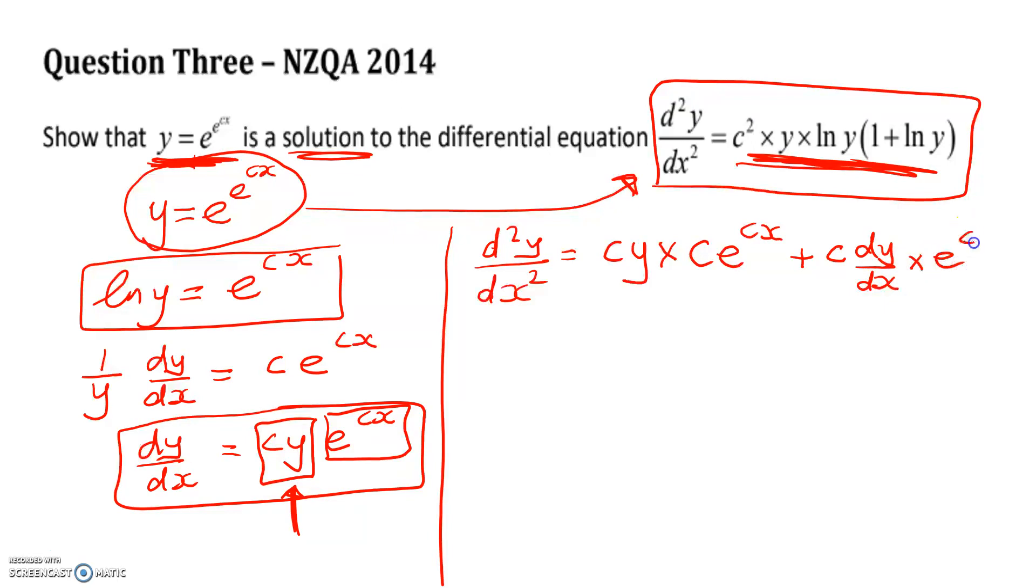And now I'm going to substitute the dy by dx in there. I really shouldn't have done that, because I've just used up half that slide. Let's just get rid of that arrow.